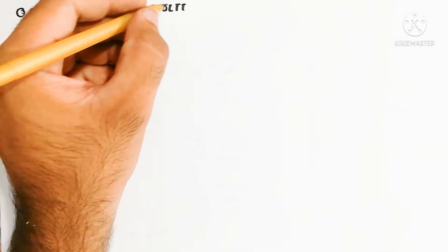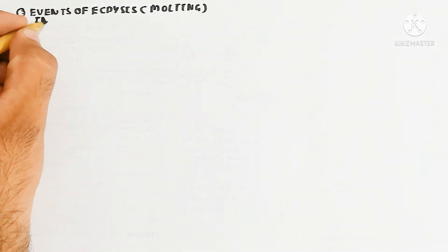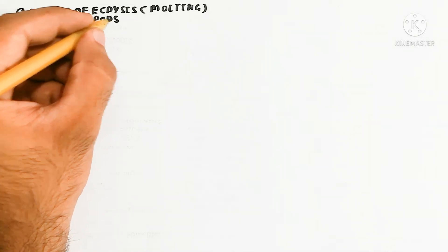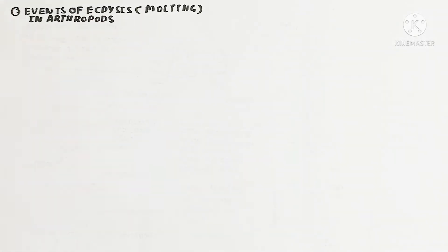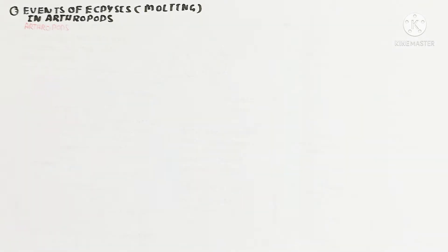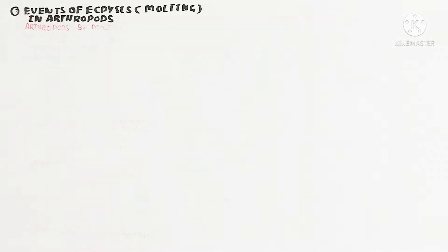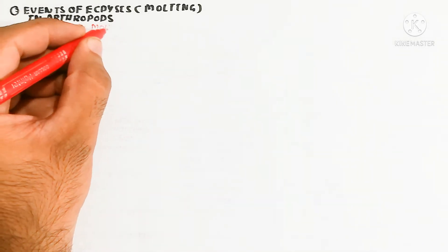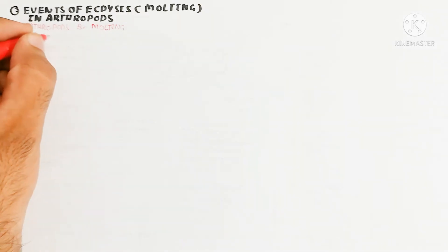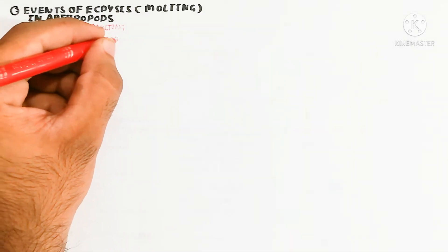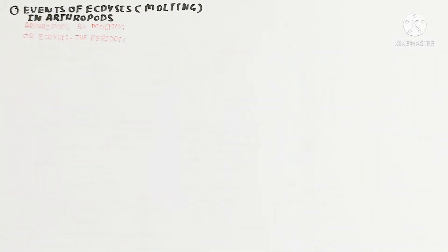Hello. In this video we will look at the events of ecdysis, for example molting in arthropods. Basically the phylum Arthropoda undergoes the periodically shedding of the exoskeleton because it contains an exoskeleton. Arthropods, by molting or ecdysis, periodically shed the exoskeleton because they need to grow and develop, as the exoskeleton will inhibit the growth of the organism.